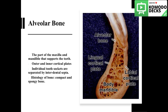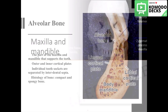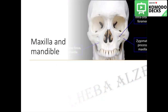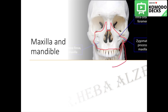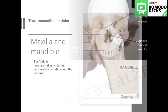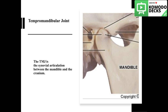The alveolar bone is a process from the maxilla or the mandible that contains the sockets. The maxilla and the mandible will be discussed in detail. The temporomandibular joint is the only joint in the oral cavity. It is a synovial articulation, and the articulating surfaces of this joint are the mandible and the cranium. We will discuss that in detail later.